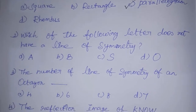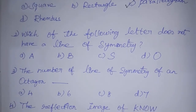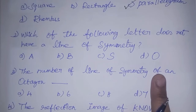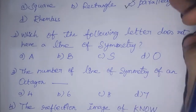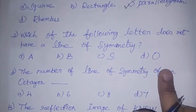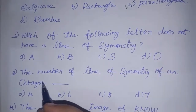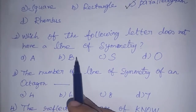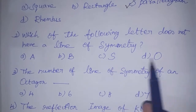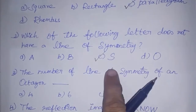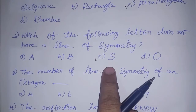Which of the following letter does not have a line of symmetry? If you look at the options, you can see the line of symmetry in each letter. A can have a line, B can have a line, O can have a line. In S, we cannot draw the line of symmetry.